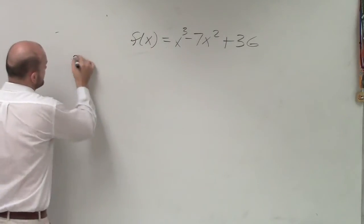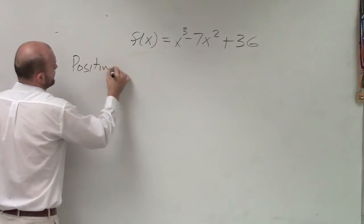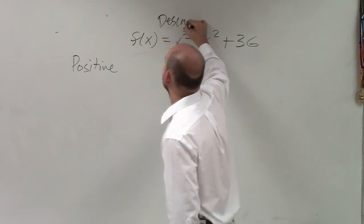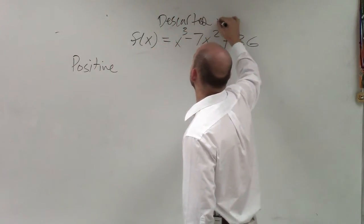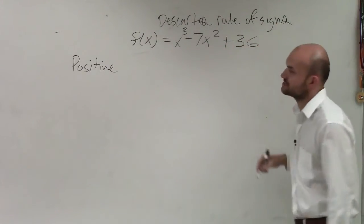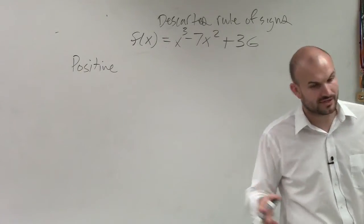So the first thing I do, this is what we call Descartes' rule of signs, is to use the positive. So this would be Descartes' rule of signs. And what Descartes' rule of signs tells us is the number of positive and negative real zeros.